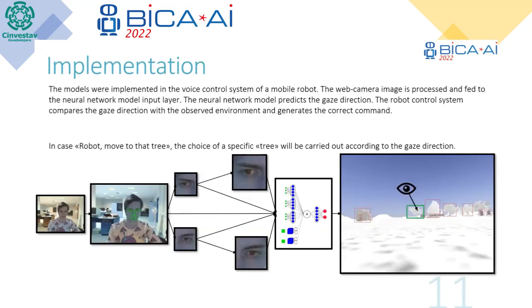The models were implemented into the voice control system of a mobile robot. The web camera image is processed and fed to the neural network model input layer. The neural network model predicts the gaze direction. The robot control system compares the gaze direction with the observed environment and generates the correct command. For example, in the command 'robot move to that tree,' the choice of a specific tree is carried out according to the gaze direction.